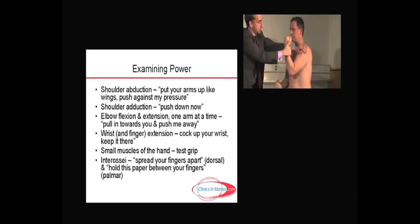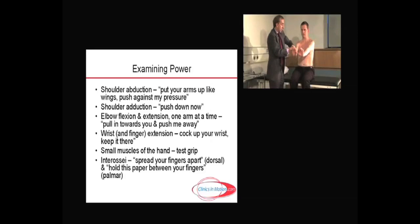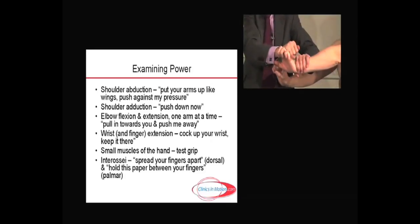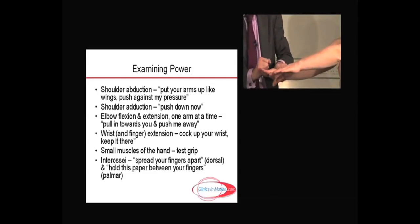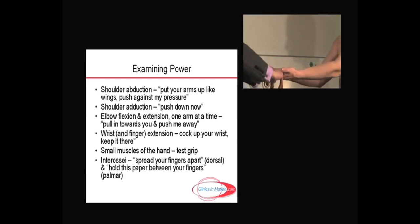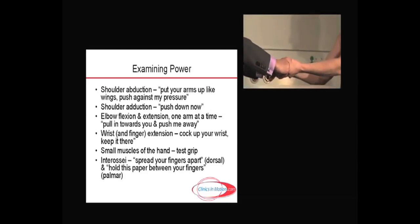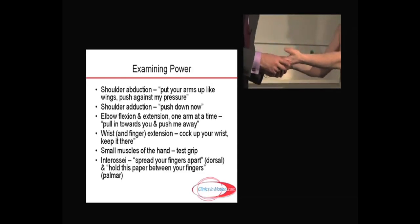Then the natural progression is to extend the hands. Ask the patient to cock up the wrists — wrist extension, C6 — and test finger extension with hands out straight. Then turn the patient's hands over and test grip, squeezing as tightly as possible. Then test the small muscles of the hand — the interossei.